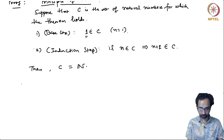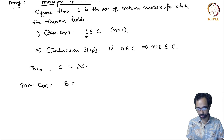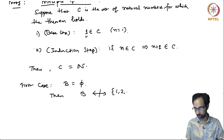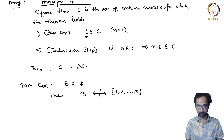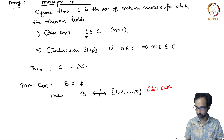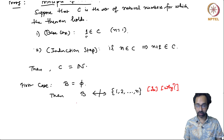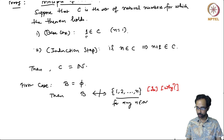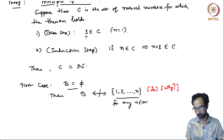The first case is that your proper subset B is empty. Then B cannot be in bijective correspondence with the set {1, 2, ..., N}. I will leave this as an exercise for you to think about why there cannot be a bijective correspondence between the empty set and the set {1, 2, ..., N} for any N. So the theorem holds for the case when B is empty.